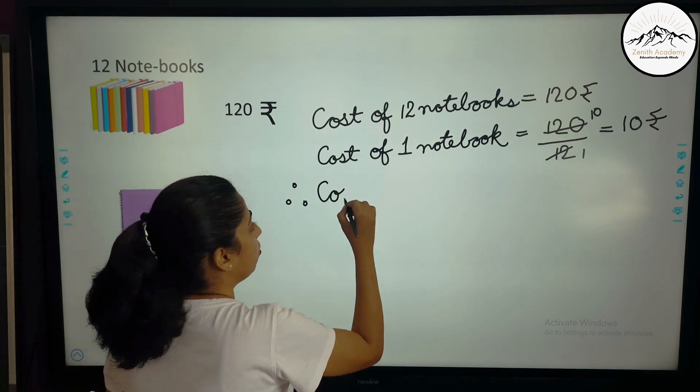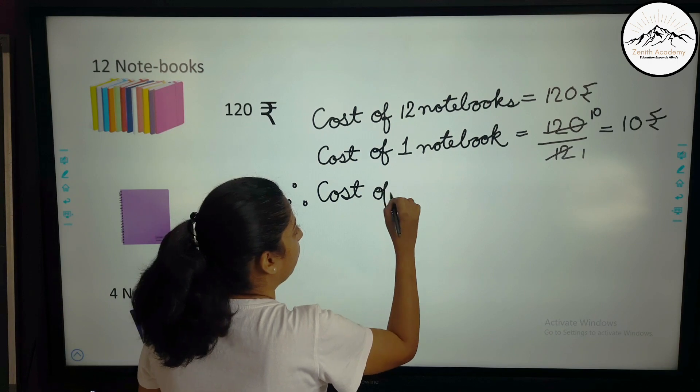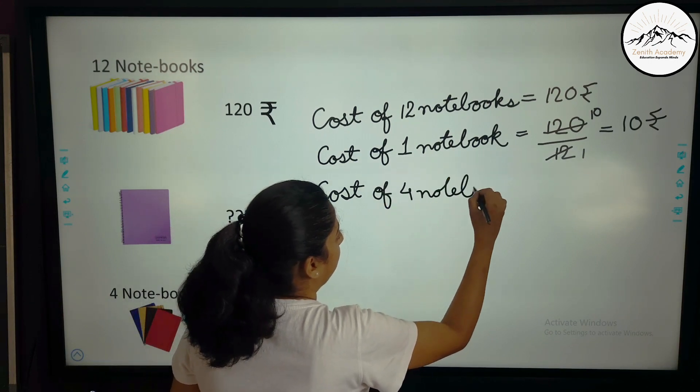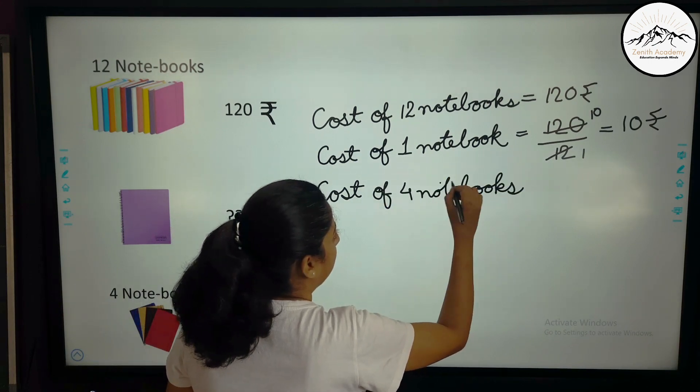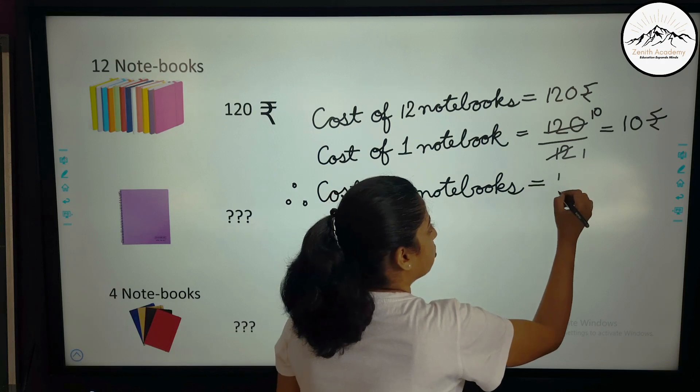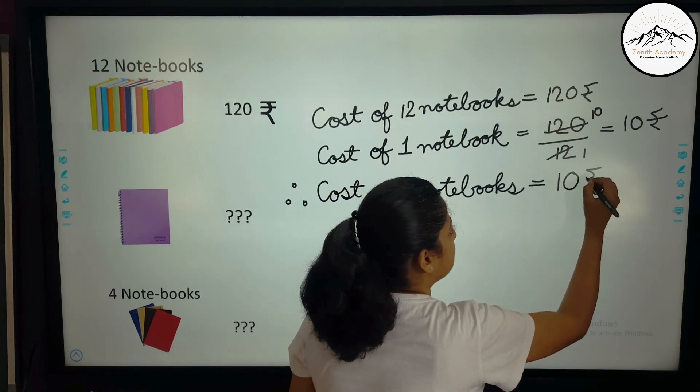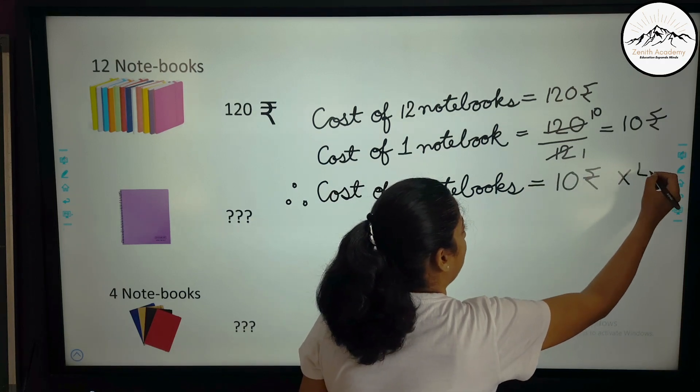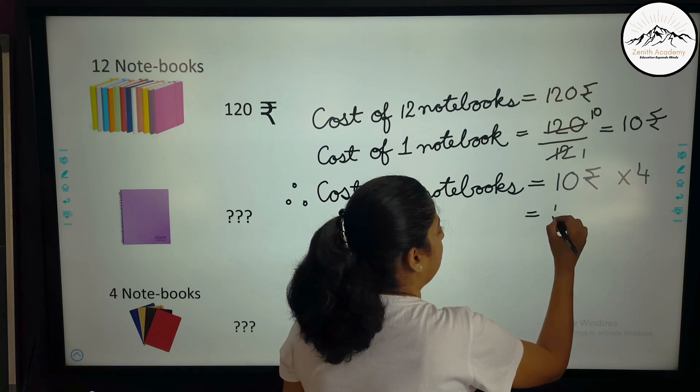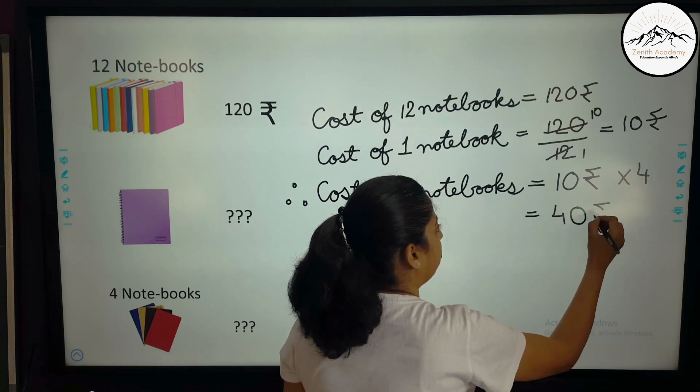So the cost of 4 notebooks will be equal to cost of 1 notebook that is 10 rupees into the number of notebooks we want. That is 10 into 4, which is equal to 40 rupees.